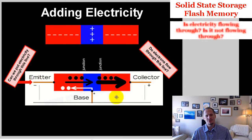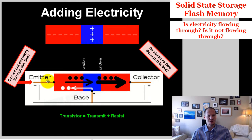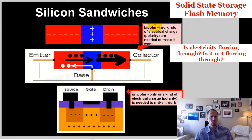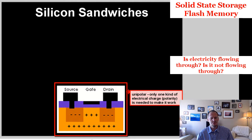When we add electricity to this NPN silicon sandwich, connecting wires and applying charges, we ask: do electrons flow through from left to right? When we add a positive charge on one end, negative on the other, and positive on the third terminal, the electrons are able to cross this larger no-man's-land with the p-type in the middle, and we get a current going across. This is actually known as a bipolar transistor because it requires two polarities of electricity — positive and negative — to make it work.